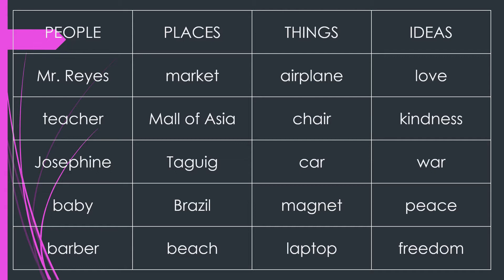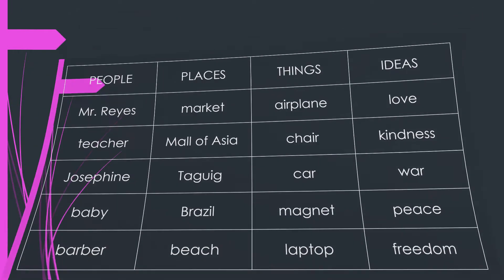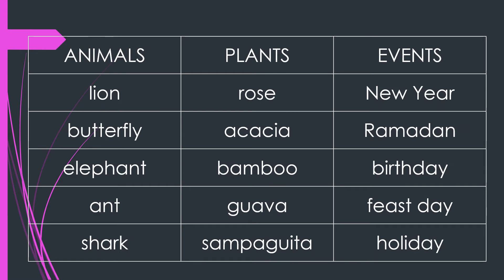And for ideas: love, kindness, war, peace, and freedom. For animals: lion, butterfly, elephant, ant, shark.